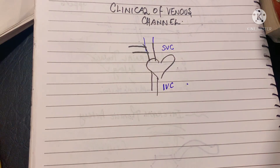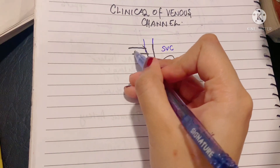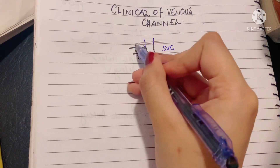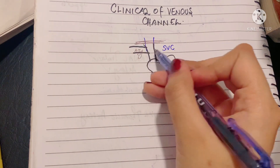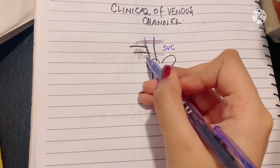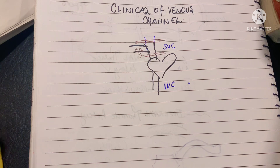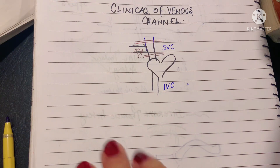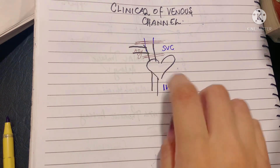The first type of blockage can occur before the entry of the azygous vein into the superior vena cava. The second type occurs after the azygous vein has entered — meaning the superior vena cava undergoes blockage after that point. At the end of the day, all the blood has to somehow reach the heart.